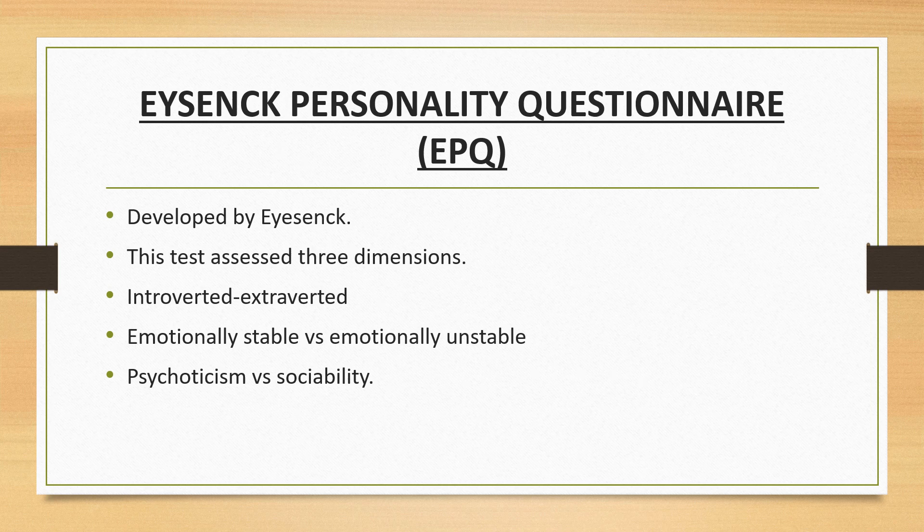The Eysenck Personality Questionnaire (EPQ), developed by Eysenck in 1975, is a series of tests designed to measure normal and abnormal dimensions of personality. Eysenck identified three major dimensions: psychoticism, extroversion, and neuroticism. The EPQ comprises items that intend to measure these three dimensions. It consists of 90 statements answered as yes or no, and is especially suited for persons aged 16 and older. A Junior EPQ is available for children aged 7 to 15, consisting of 81 statements.